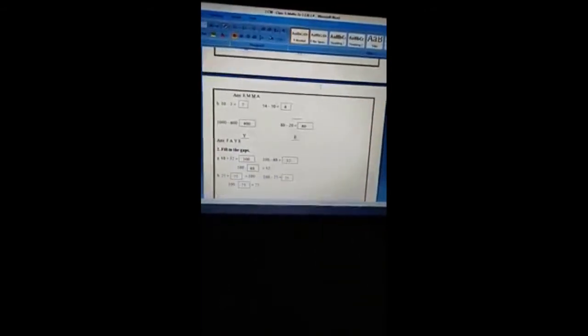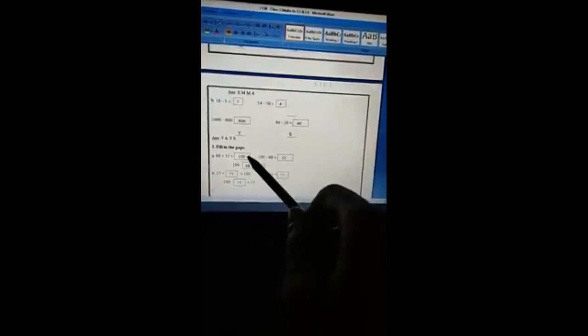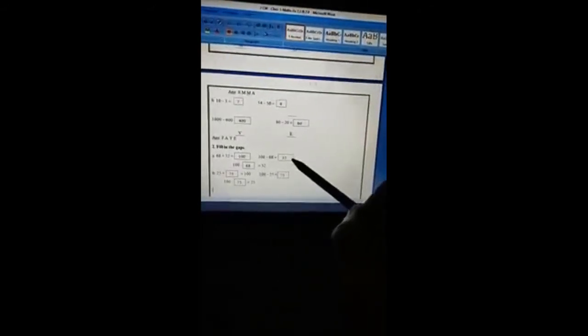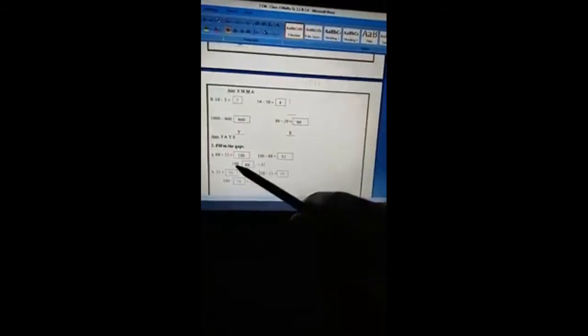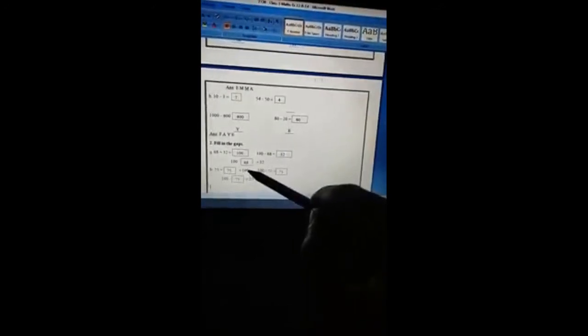Fill in the gaps: 68 plus 32, the answer is 100. Next, 100 minus 68 is 32. Then 100 minus which number will be 32? We will subtract 32 from 100 to get this number. If we subtract 32 from 100 we will get 68, so 68 is the answer. 25 plus what will be 100? If we subtract 25 from 100, we will get 75.